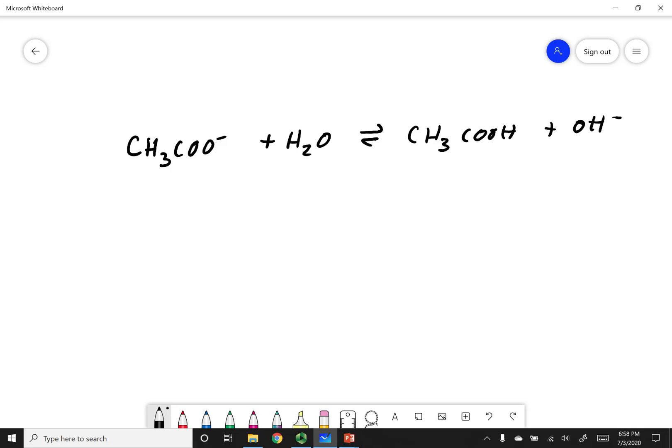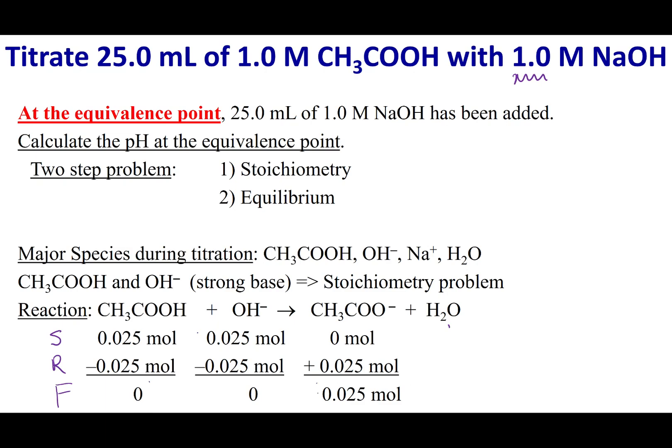Now, I want to do an ice table because, like I said, this is the second part to the problem. I, C, and E. Now, remember, for an ice table, we want to plug in molarities. So let's go ahead and look at our surf table results. So in our surf table, we calculated the moles of acetate. It was 0.025 moles.